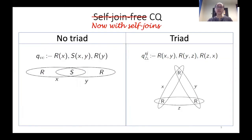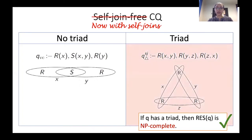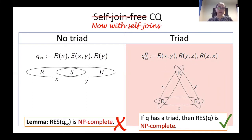For the current work, we are interested in analyzing what happens when we allow self-joins. It is a natural question whether the dichotomy we had for the self-join free case also holds for the self-join case. Here we have two examples of queries with self-joins: one on the right that has a triad and one on the left that does not. One of the first things we are able to show is that the presence of a triad in the self-join case also implies that the resilience is going to be NP-complete. However, the example on the left is one where the resilience is also NP-complete.